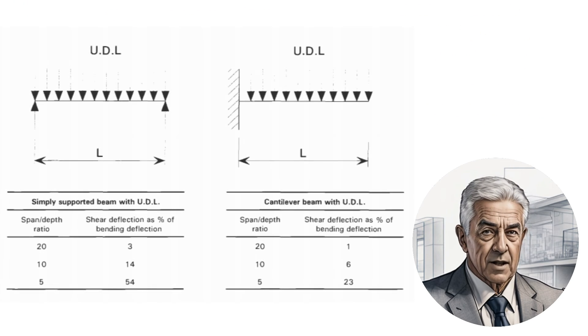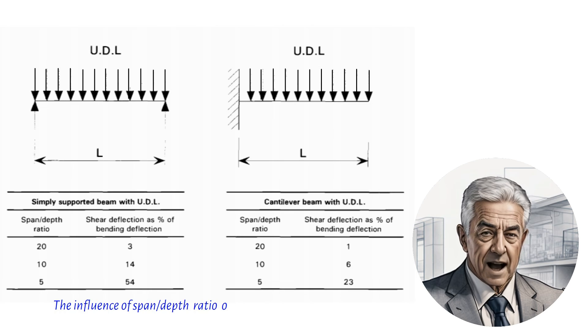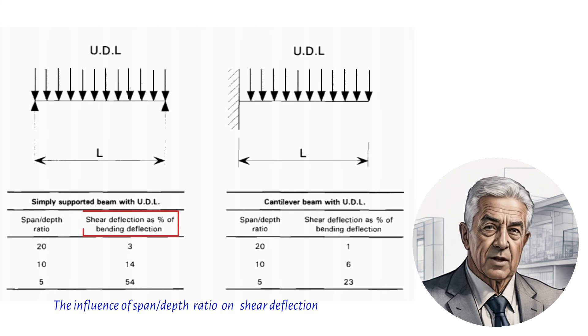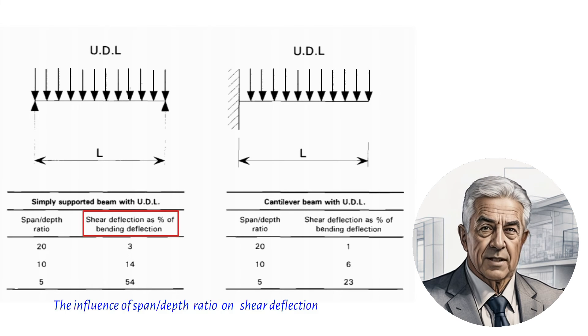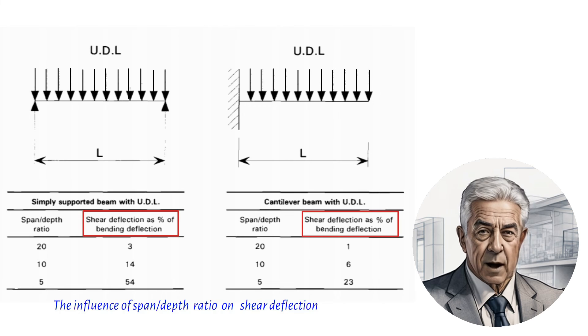The following table shows the additional deflection due to shear as a percentage of the deflection due to bending for simply supported and cantilever I-section members.